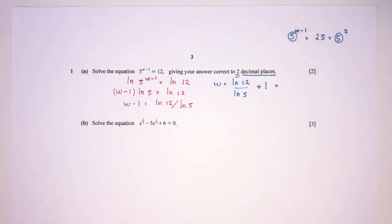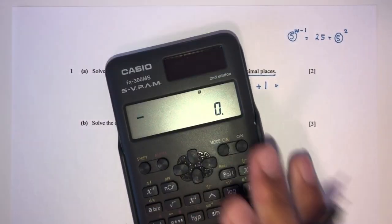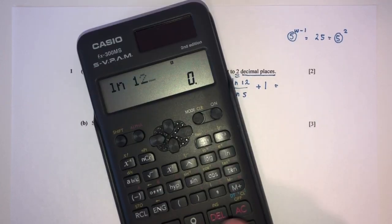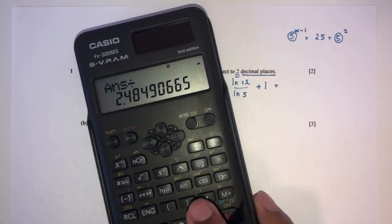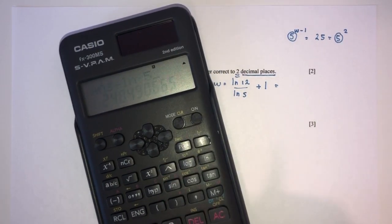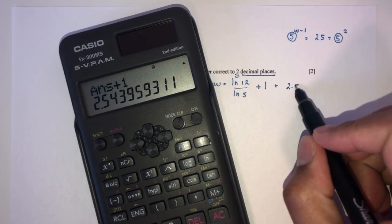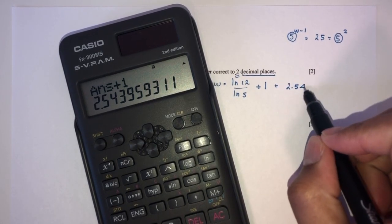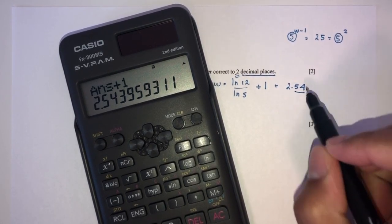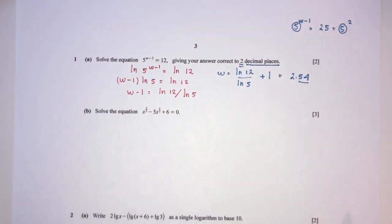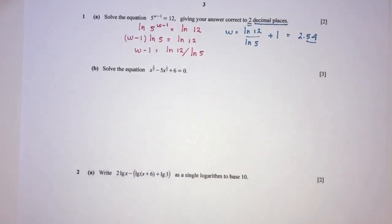Let's calculate: ln 12 divided by ln 5 plus 1. That gives 2.54, correct to 2 decimal places. That is your answer for question part A.